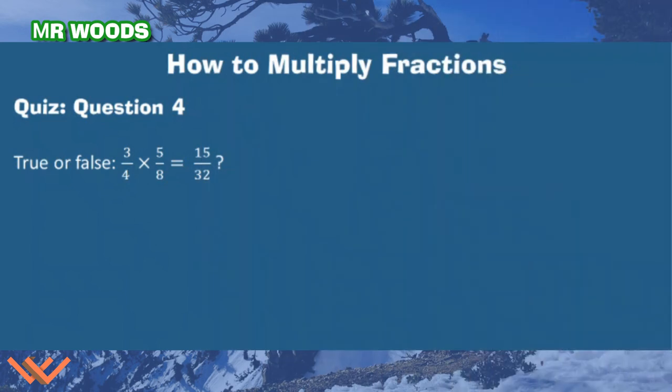Question number four. True or false? Is three fourths times five eighths equal to fifteen thirty-seconds? Well, let's evaluate it. Three times five is fifteen, right? Four times eight is thirty-two. So that's true. Absolutely true.